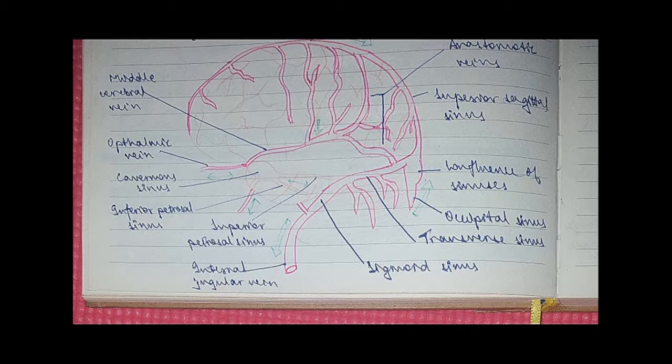Now from the other side, you've got the cavernous sinus which I told you is connected with emissary veins to the ophthalmic vein. So that drains into the cavernous sinus. You have the petrosal sinuses which form the inferior and the superior petrosal sinuses. They also eventually end into the sigmoid sinus which drains into the internal jugular vein.